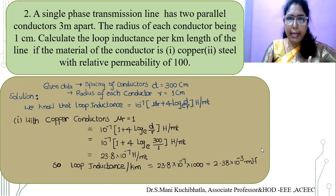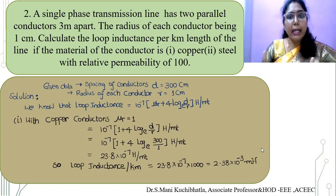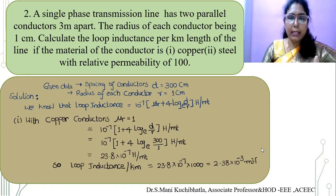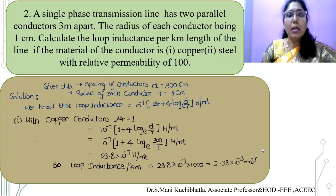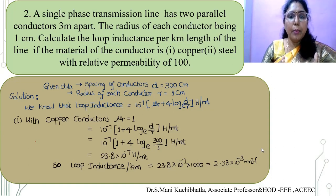A single phase transmission line has two parallel conductors 2 meters apart. The radius of each conductor is 1 centimeter. Calculate the loop inductance per kilometer length of the line if the material of the conductor is copper and steel with a relative permeability of 100. Compared with the previous problem, two different materials are given here. The spacing between the conductors is 300 centimeters and the radius r equals 1 centimeter. The loop inductance formula is 10 to the power minus 7 into (mu_r plus 4 log to the base e of d/r) henries per meter.